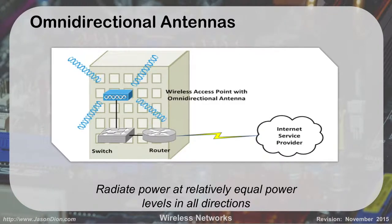The first antenna type is the omnidirectional antenna. Omni meaning all — so it radiates power evenly across all directions. If you put it in the center of a building, you should have fairly good coverage. At your house, the wireless access point given by your cable or Internet provider uses an omnidirectional antenna. So if you put it in one corner of the house, the other side may not get as good coverage — you want to try to get it in the center.